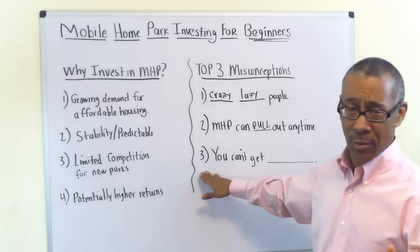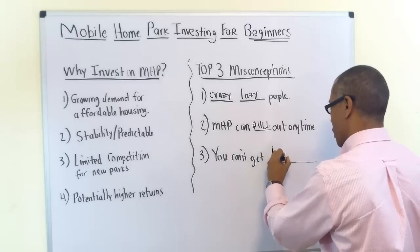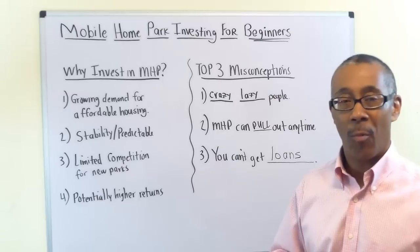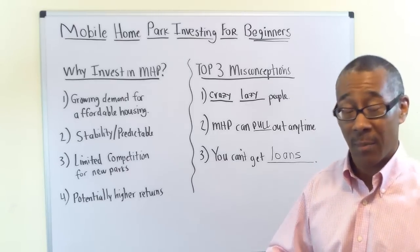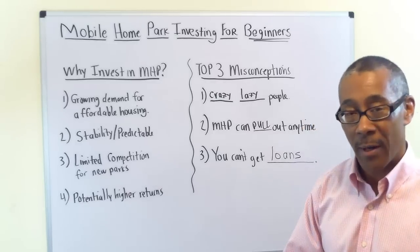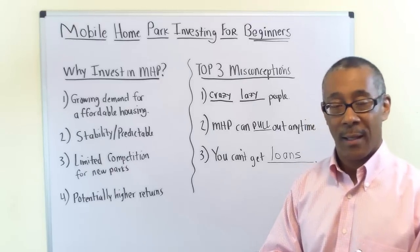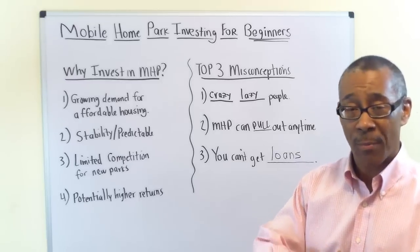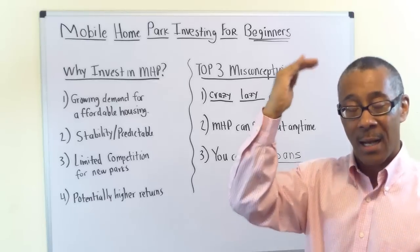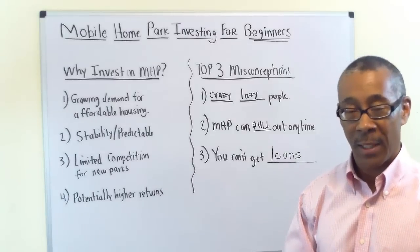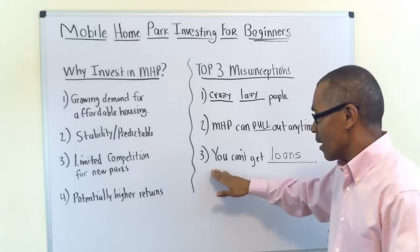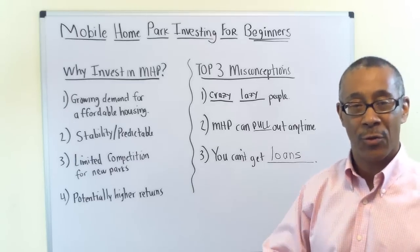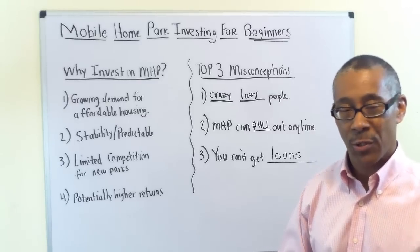The last misconception is that people think you can't get loans — and that's just not true. Mobile home parks probably have the most options for getting loans. Banks love mobile home parks. In fact, research shows that out of all commercial loan types, mobile home parks have the lowest default rates — including apartments, office buildings, strip centers, and self-storage. The easiest and most popular way of buying mobile home parks is through seller financing and creative financing, which is our favorite thing to teach students.